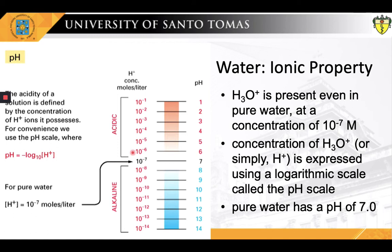In chemistry, pH — denoting potential of hydrogen or power of hydrogen — is a scale used to specify the acidity or basicity of an aqueous solution. Lower pH values correspond to solutions that are more acidic in nature, while higher values correspond to solutions which are more basic or alkaline. At room temperature, pegged at 25 degrees centigrade, pure water is neutral — neither acidic nor basic — and therefore has a pH of 7.0. In biological systems, the inside of cells is kept close to neutrality, but not exactly pH 7. The pH scale is logarithmic and inversely indicates the concentration of hydrogen ions in the solution. In other words, a lower pH indicates a higher concentration of hydrogen ions and vice versa. This is because the formula used to calculate pH approximates the negative of the base-10 logarithm of the molar concentration of hydrogen ions in the solution.